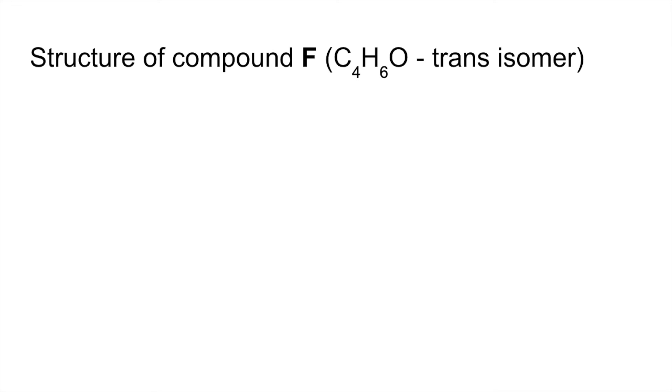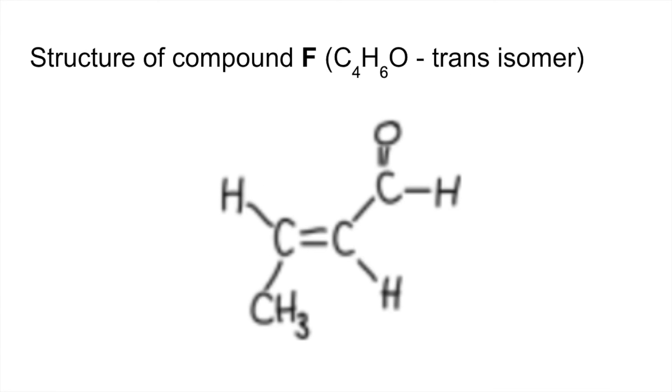Okay, so we're going to put that all together now and come up with a structure. So we know that the molecular formula is C4H6O, we know it's a trans isomer, and so the structure is that there. So now we've got the structure on the screen, you can see we've got the CHO group. So that C=O caused the infrared absorption at around 1,700 wavenumbers.